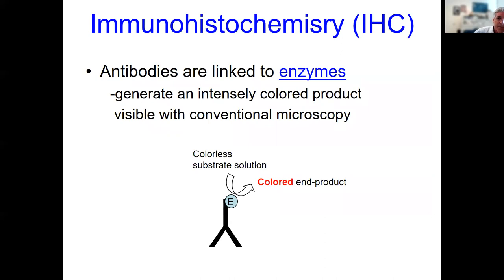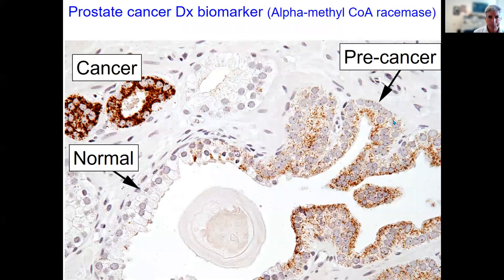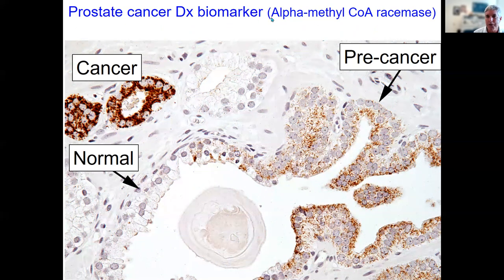Immunohistochemistry is similar to fluorescence but instead of tagging the antibody with a fluorescent dye, it's conjugated to an enzyme. The enzyme takes a colorless substrate solution and turns it into a colored end product localized to the area of the antibody. The most widely used chromogen is DAB (diaminobenzidine), which produces a dark brown or even black color. Here's a nice example in prostate cancer: normal epithelial cells express no protein, cancer cells are very darkly stained, and a precancerous lesion produces an intermediate amount.